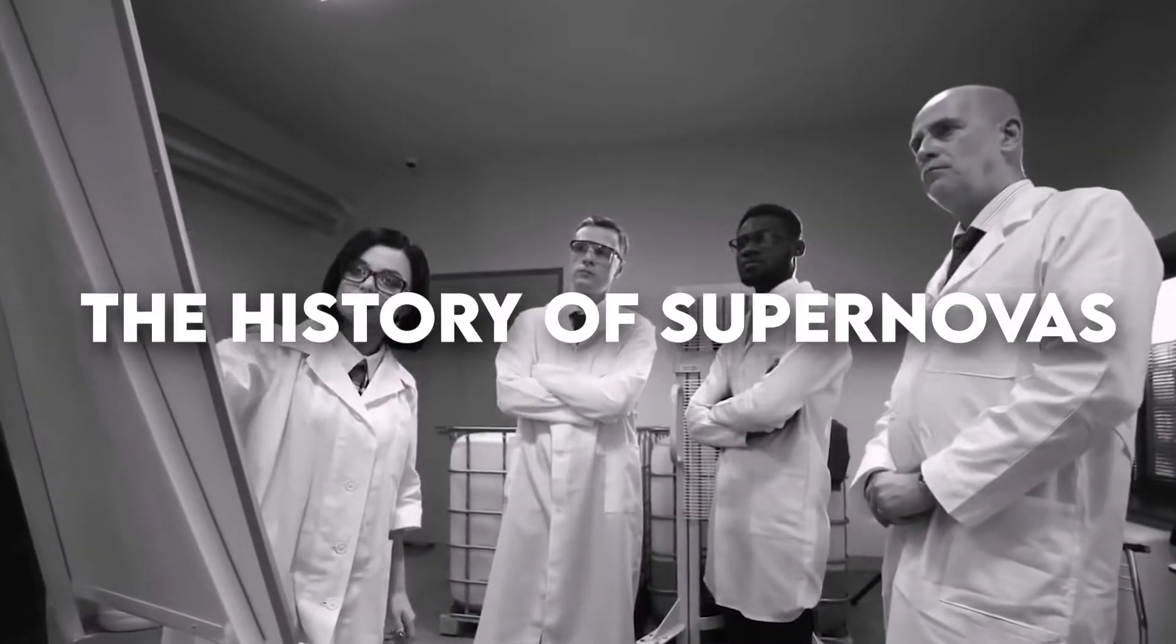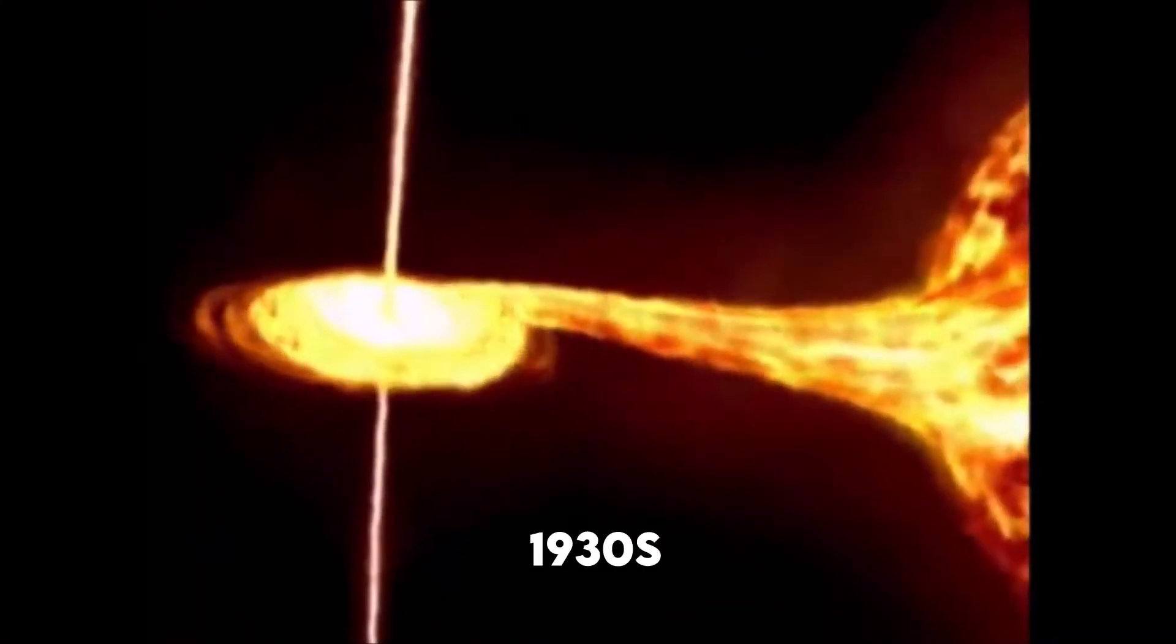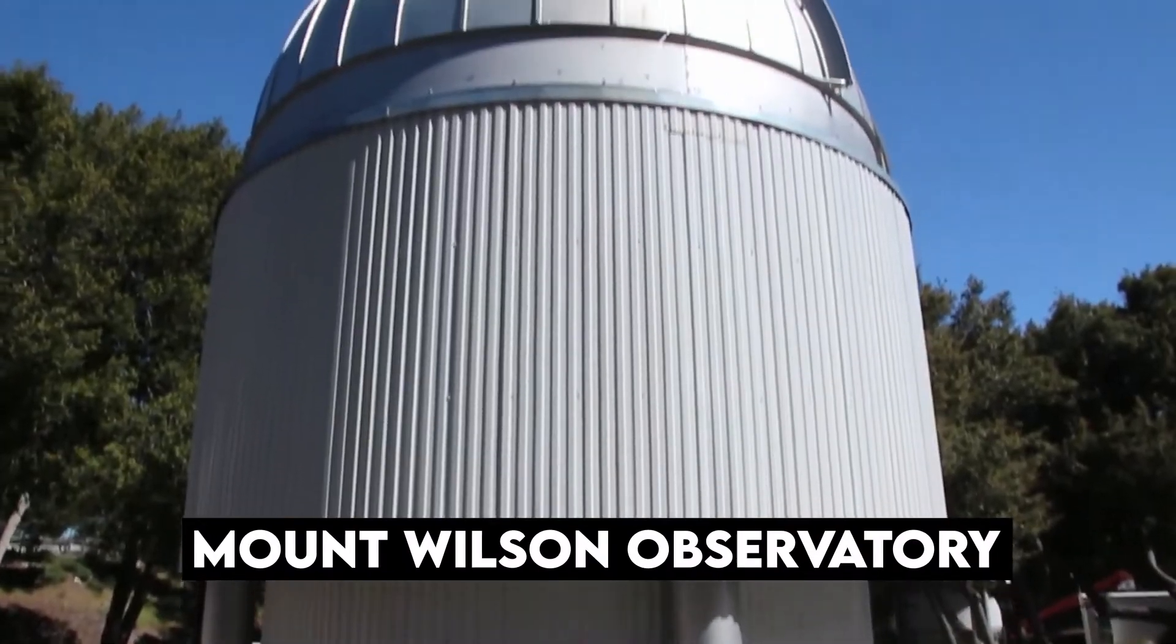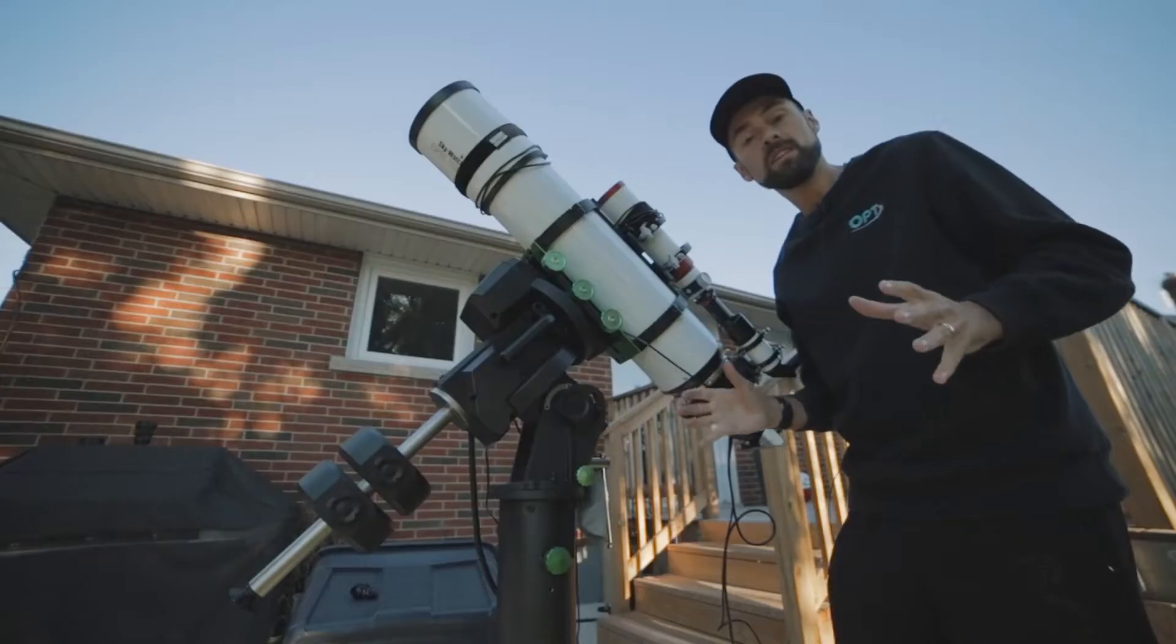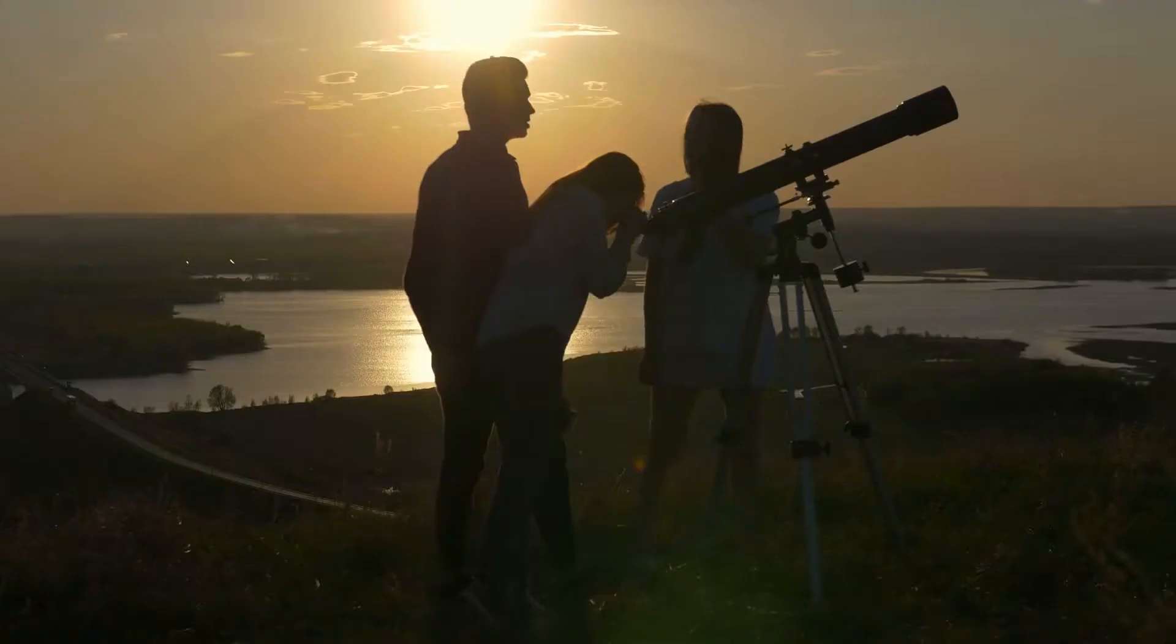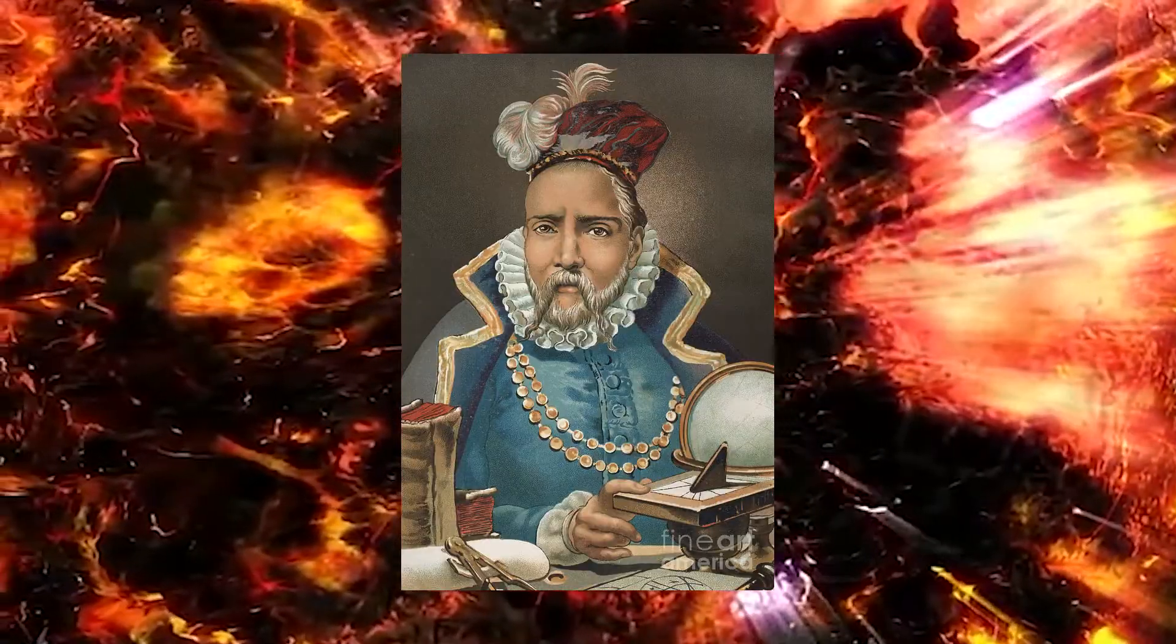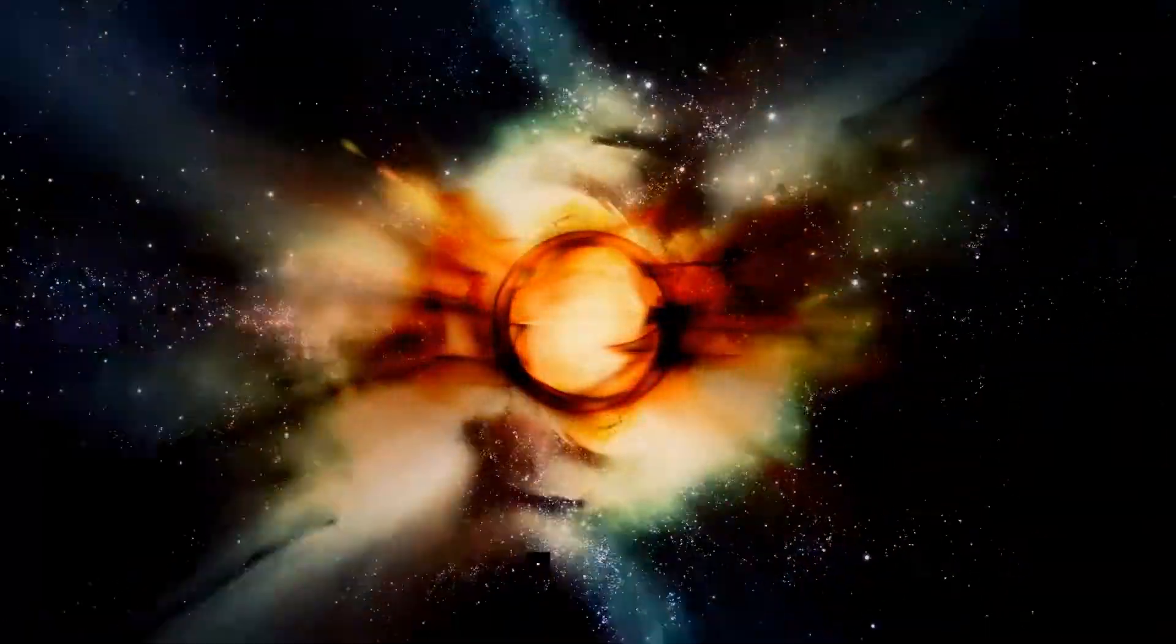The history of supernovas. The term supernova did not become popular until the 1930s. It was first used by Walter Bade and Fritz Zwicky at Mount Wilson Observatory in reference to an explosive event known as S. Andromeda. Before the invention of the telescope, supernovas were witnessed by many famous astronomers, and one such astronomer was Tycho Brahe. In 1604, in his work De Nova Stella, Brahe described his observations of the new star, which gave origin to the term nova.